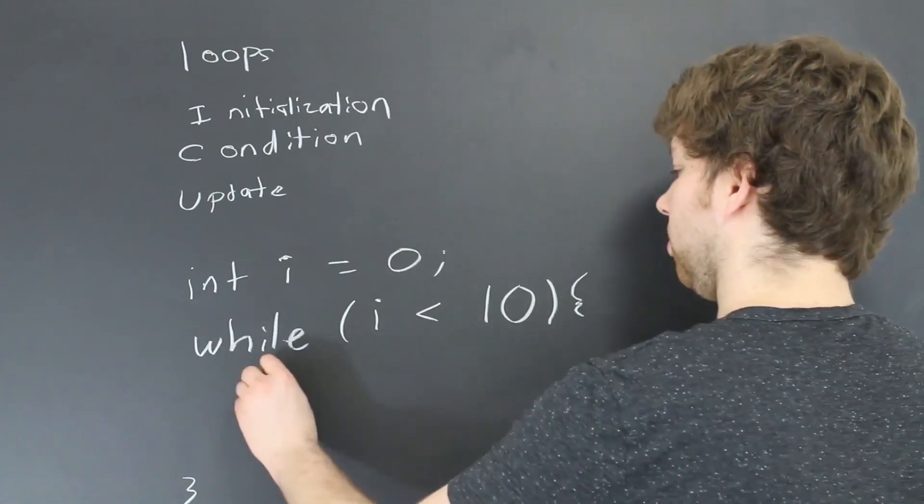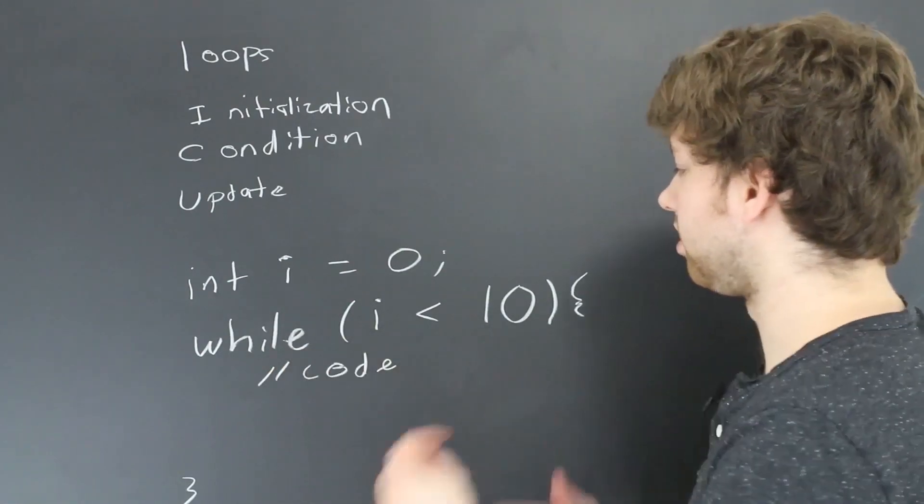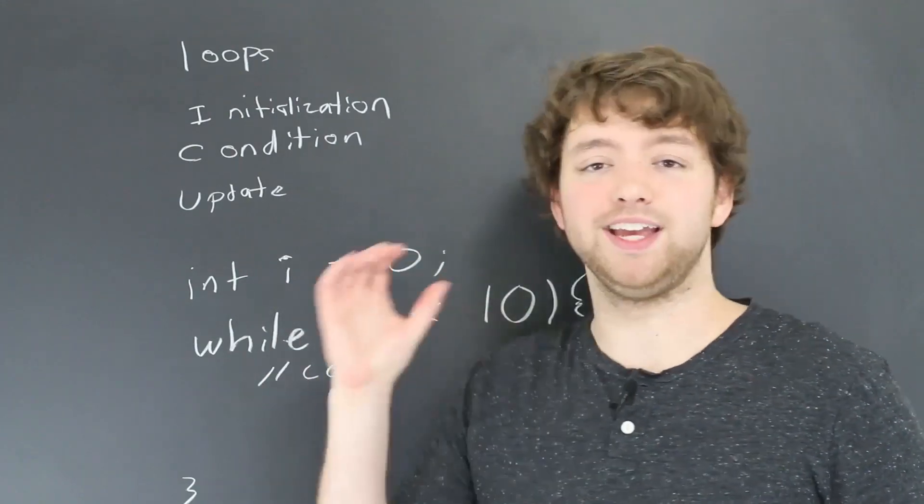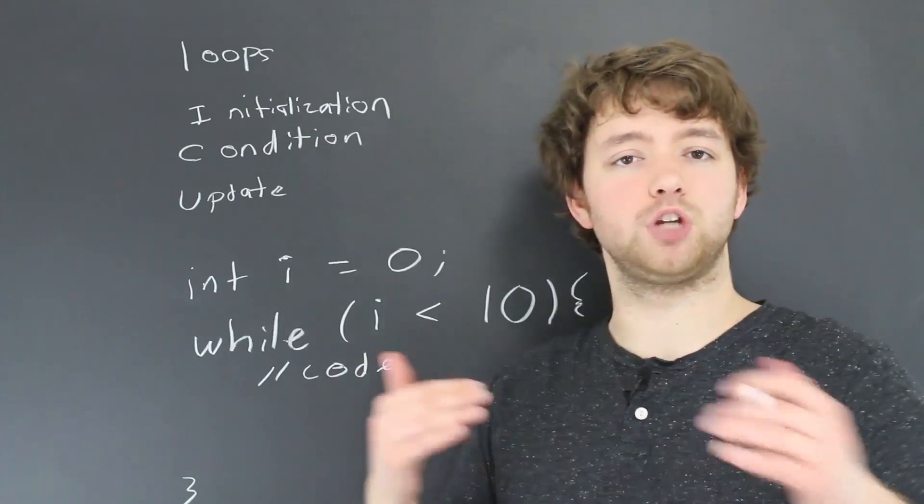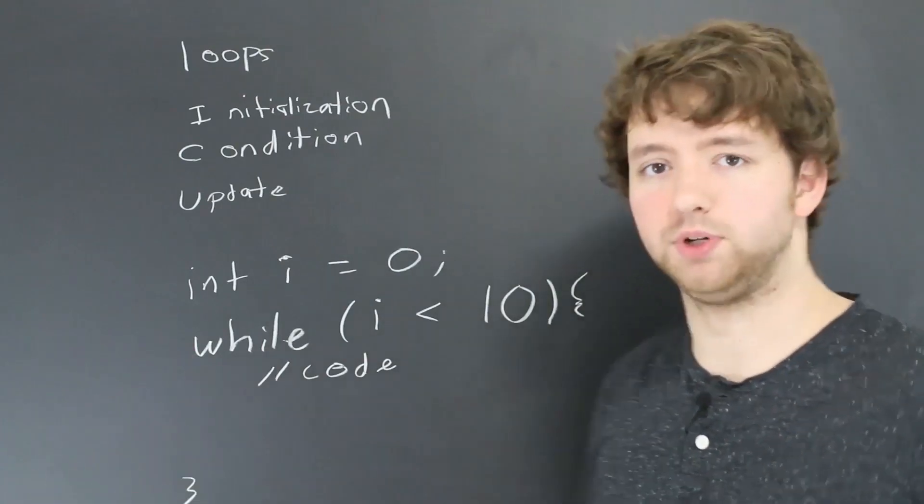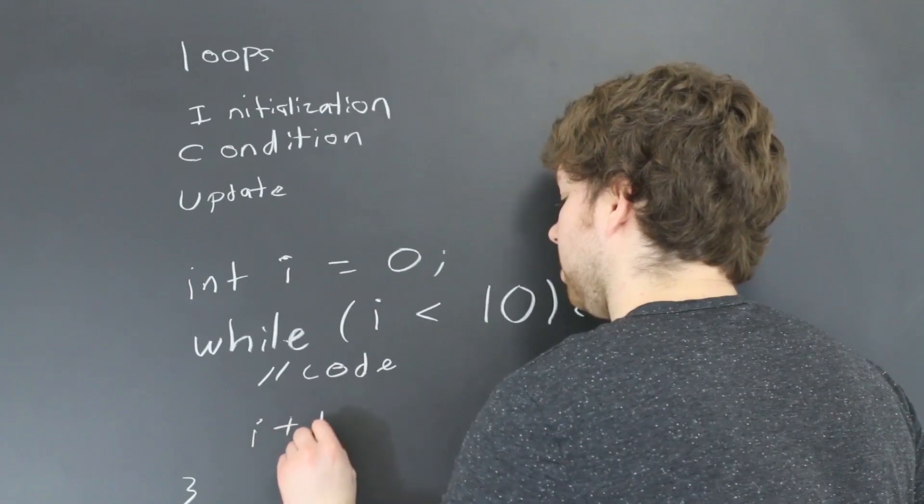So we can do something like while i is less than 10. Then we use curly braces to make a code block. And in here we put our code. So this is what we want to do numerous times. So this is going to keep happening, this code block right here. But at the end of the code block, we need to update that variable because if there's no change, it's just going to be a loop that runs on forever, which we don't want to do.